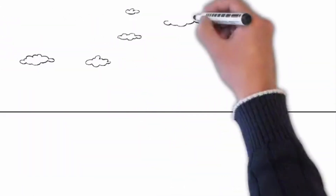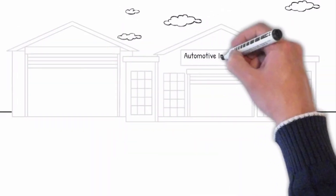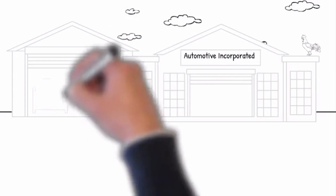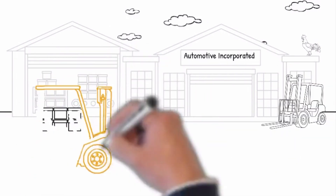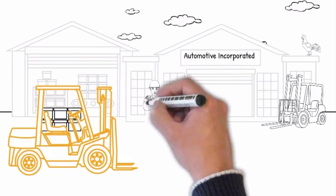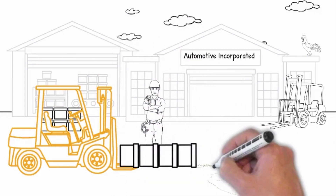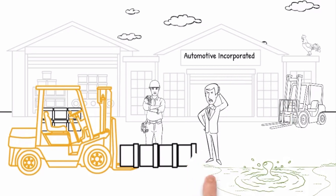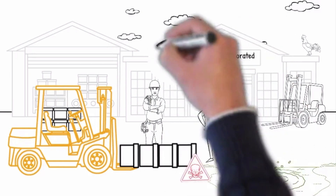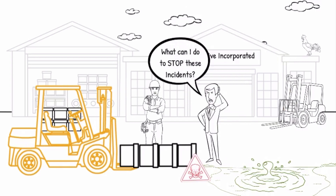We are going to observe a typical working day at Automotive Incorporated Warehouse. All activity seems to be running smoothly until the forklift driver stopped too quickly, causing the unsecured load to capsize on the ground and spilling the toxic chemicals. Fortunately, the on-site construction worker moved out of the way just in time and avoided being injured.